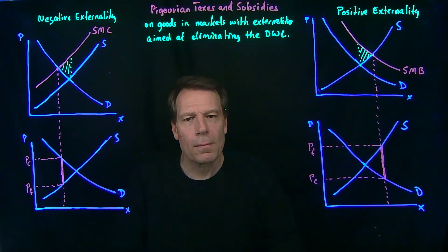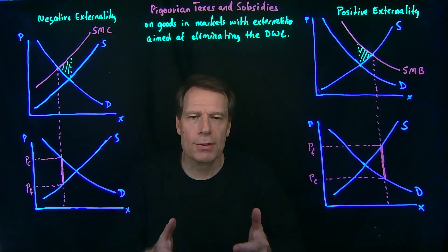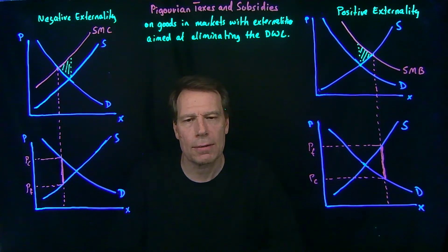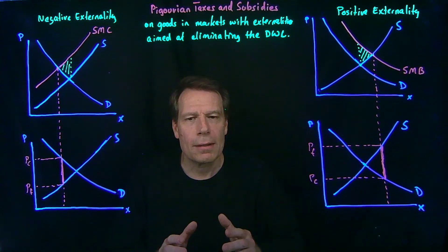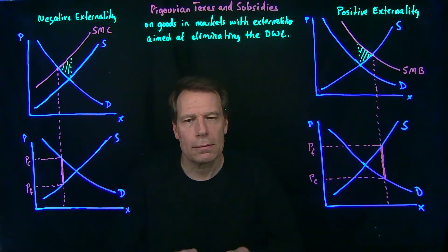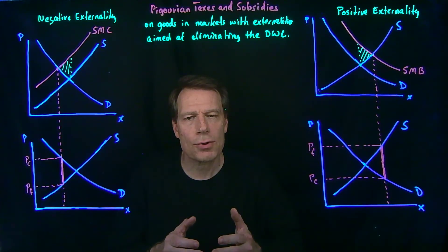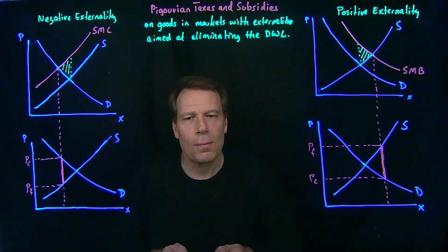So we can see that while taxes and subsidies create deadweight losses in the absence of externalities, when we have externalities, taxes and subsidies have the potential of eliminating deadweight losses. That's because when there is an externality, the price is already distorted — distorted by the presence of that externality away from a price that would cause the market to produce the optimal quantity. So we can re-distort that price back to a price where the market now has an incentive to produce the optimal quantity.